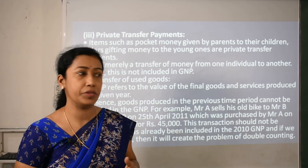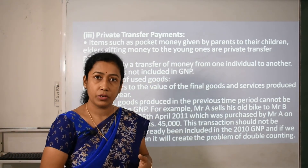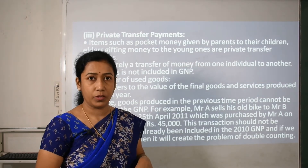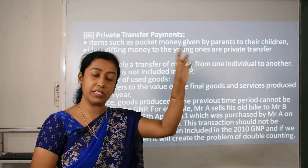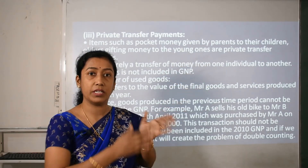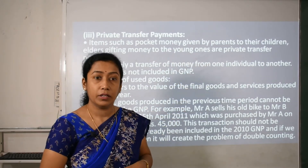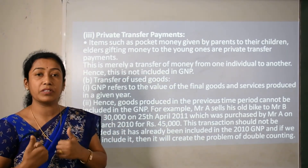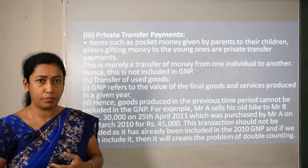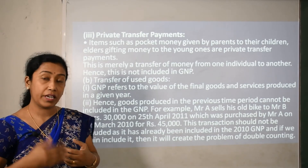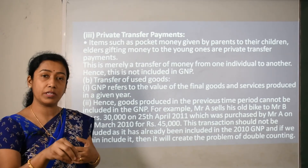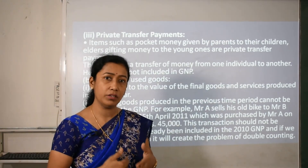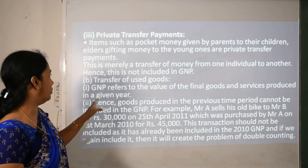Transfer of used goods: second-hand goods are also excluded from GDP. If you purchased a second-hand bike from someone, that bike was already included in the accounts when it was originally purchased in a previous year. Adding it again when the second person buys it would create duplication — a repetition of the amount.